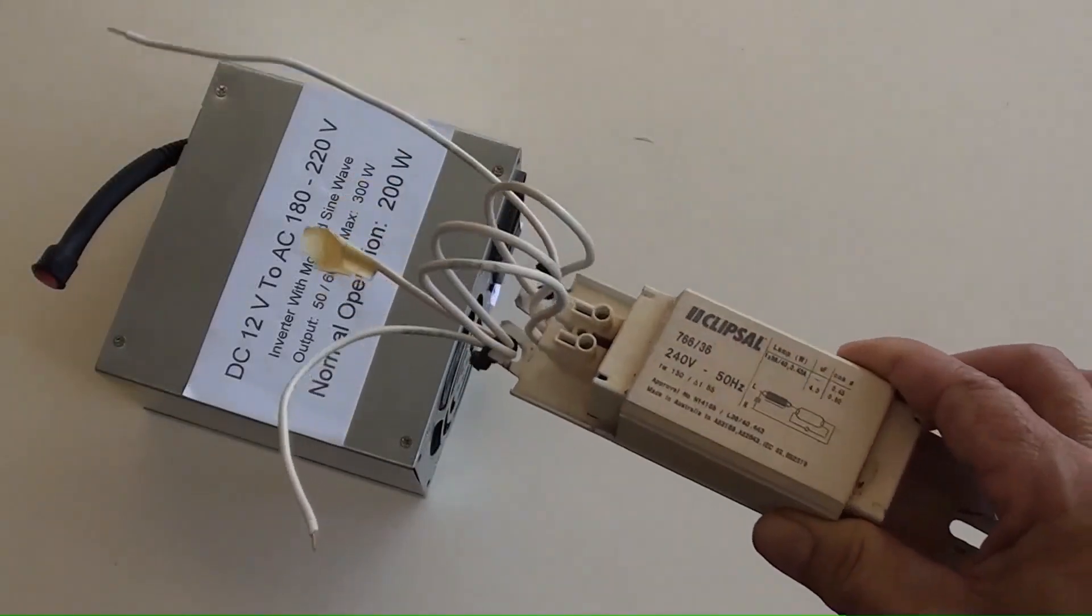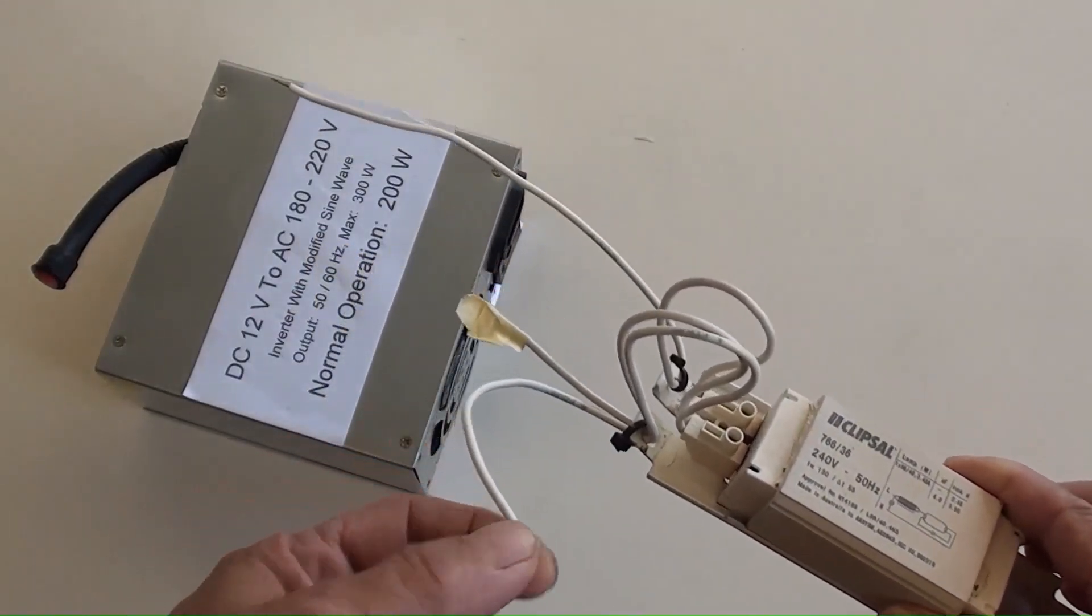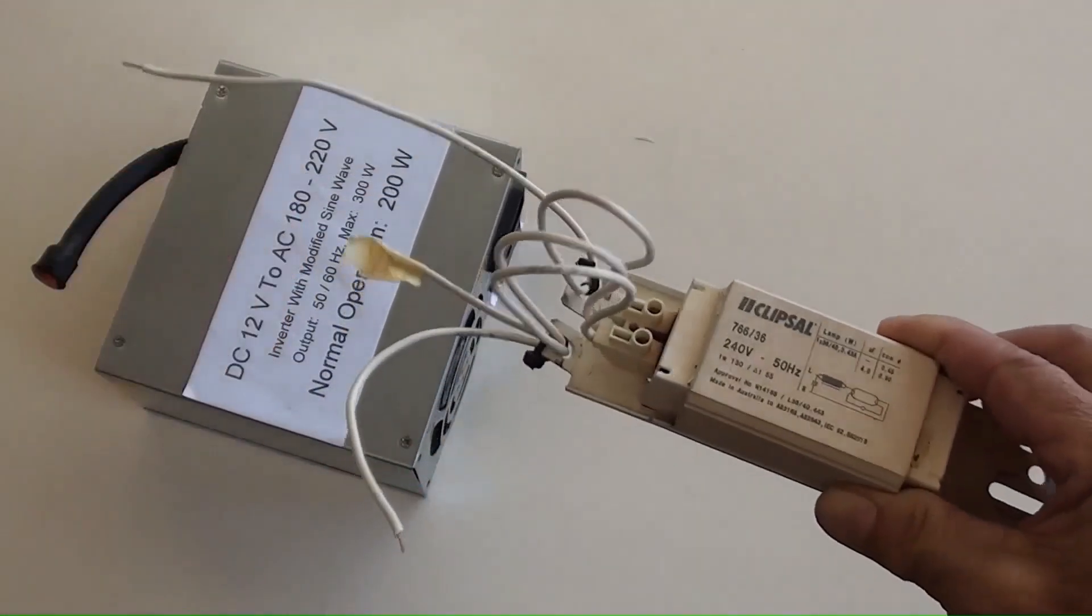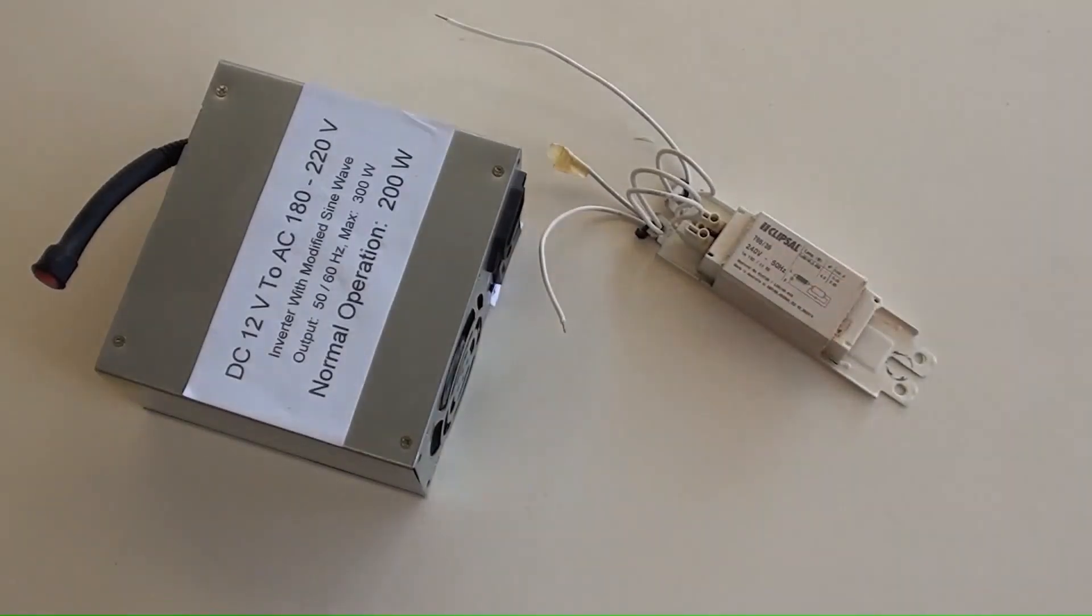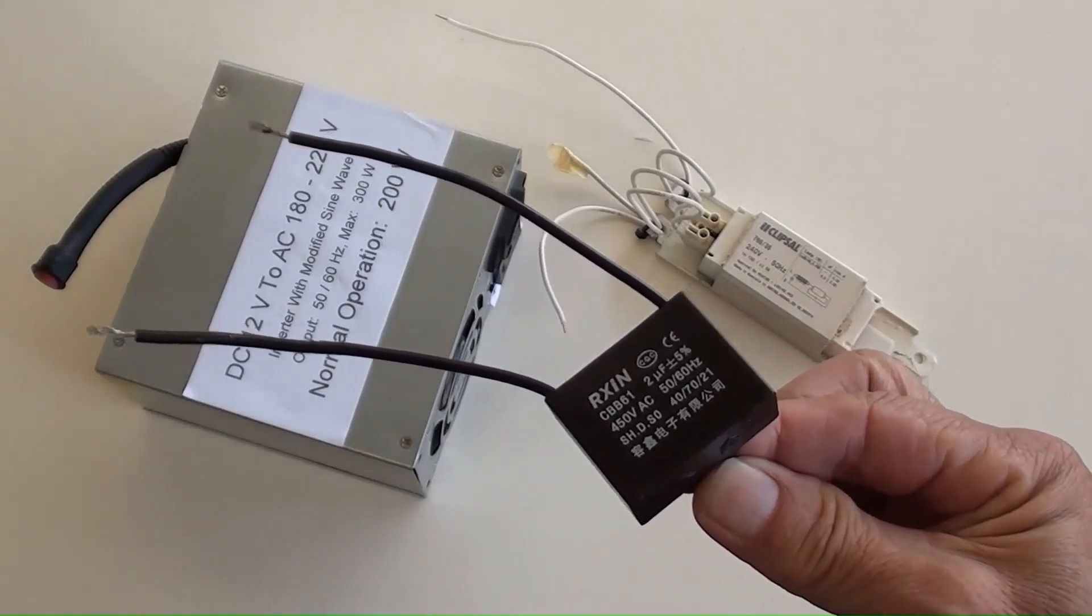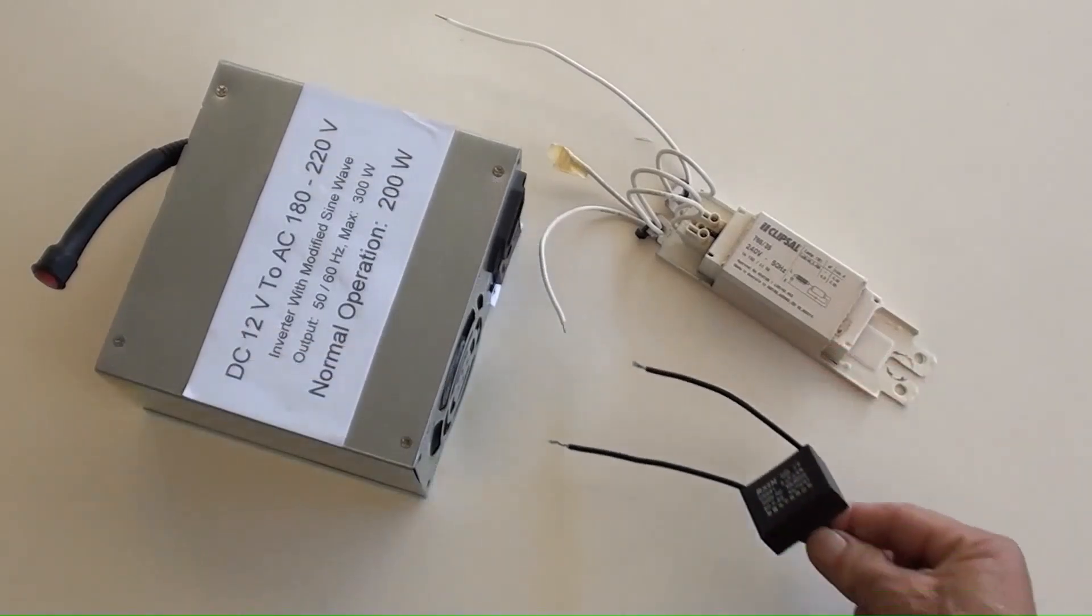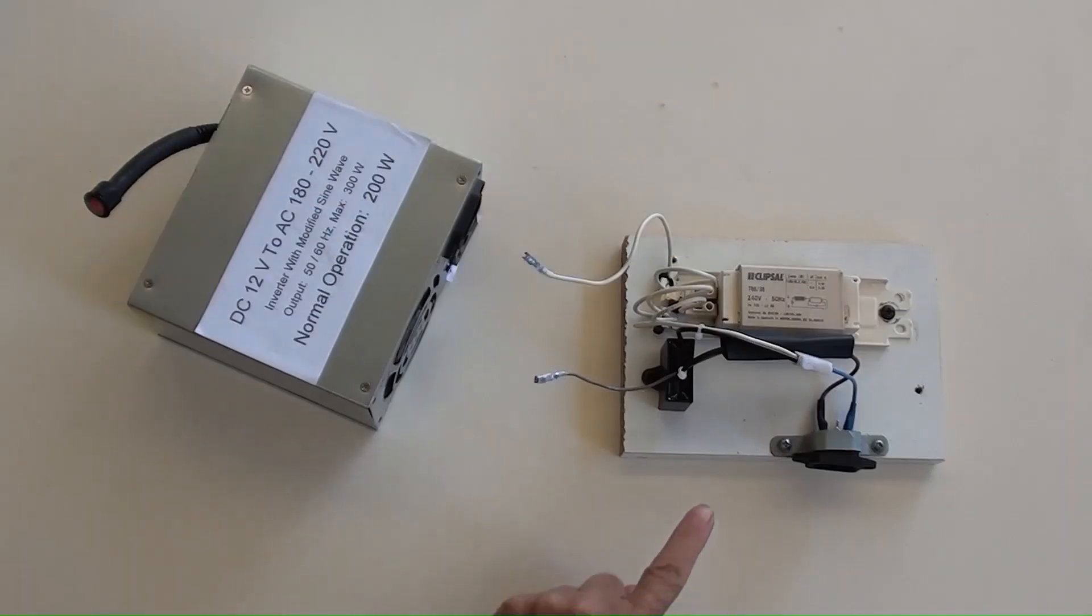Here they are. An inductor which was recycled from a fluorescent light. Its two terminals are here. A capacitor with its value of 2 mF and 450 volt. Here they go, all secured on a small board. An inductor is here, a capacitor is there.